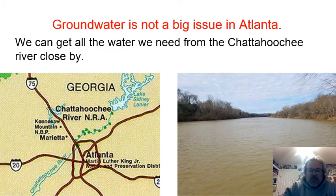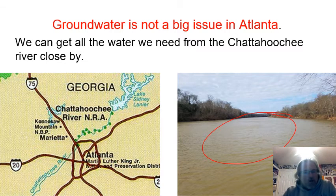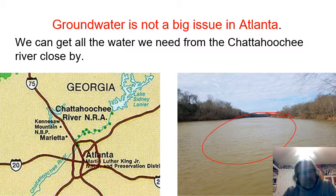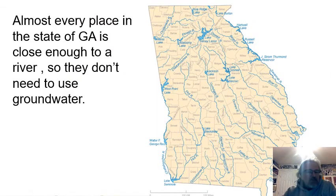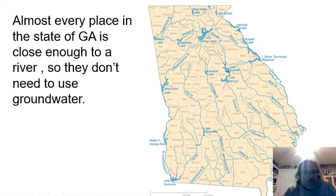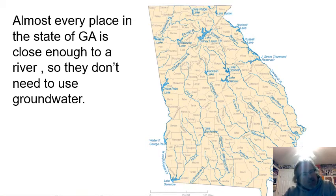For us here in Atlanta it's not a big deal — we have the Chattahoochee River with water in it, it rains a lot, and we don't need wells and groundwater as much. If you plant corn in Georgia it will rain enough to keep it growing, and almost every place in Georgia is close enough to a river. Look at these major rivers — there are enough rivers in Georgia that everybody can get their water from a river, so groundwater in Georgia isn't used as much as in the West.